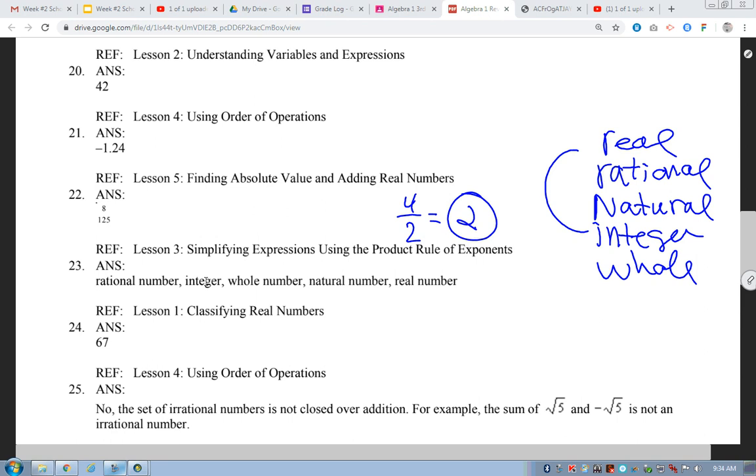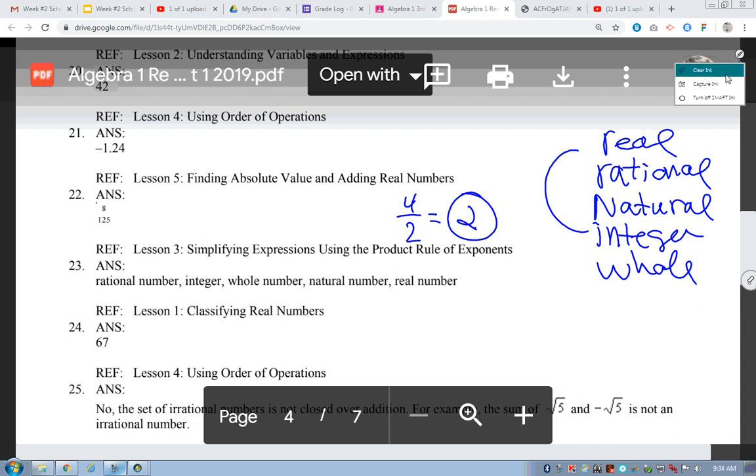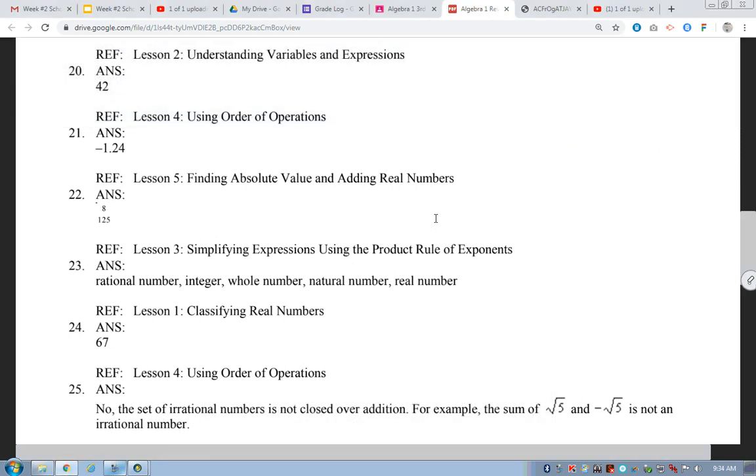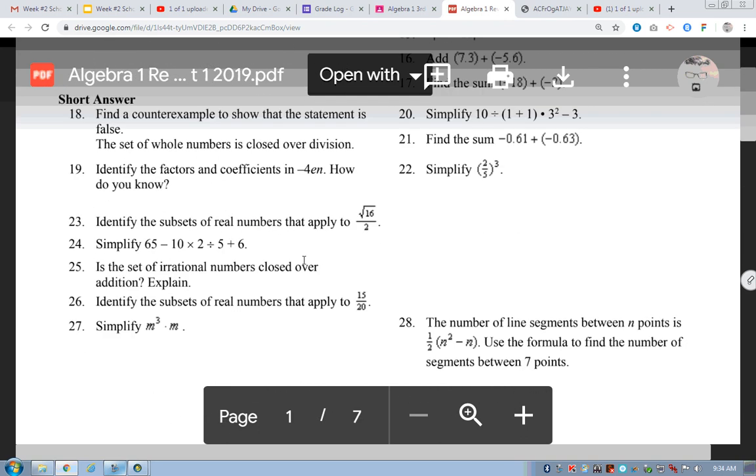Okay? The next one on the list that we want to cover is number 25. Okay? 25 is the set of irrational numbers closed over addition. Okay? Basically, what we're saying in 25 is if I add irrational numbers, am I still going to get an irrational number? Okay? Let's see. I've got to find my, let's see, 25. Okay. So, I kind of have to, you kind of have to think outside of the box here a little bit.